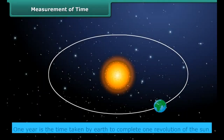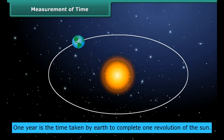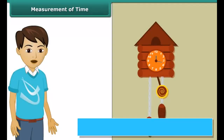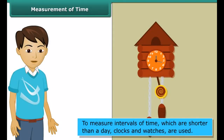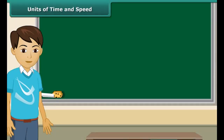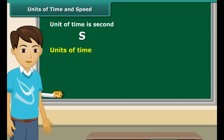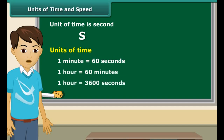Have you ever wondered how our elders could tell the approximate time of day by just looking at the shadows? Many events in nature repeat themselves after definite intervals of time. For example, the sun rises every day in the morning. The time between one sunrise and the next is called a day. Similarly, a month is measured from one full moon to the next. One year is the time taken by Earth to complete one revolution of the sun. To measure intervals of time shorter than a day, we use clocks and watches.